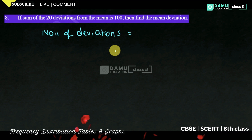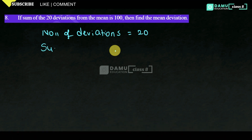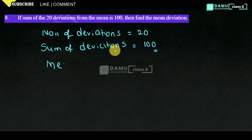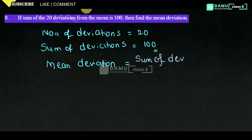Sum of deviations will be equal to 20, and sum of deviations that are given is 100. Then find the mean deviation. Mean deviation will be equal to sum of deviations divided by number of deviations.